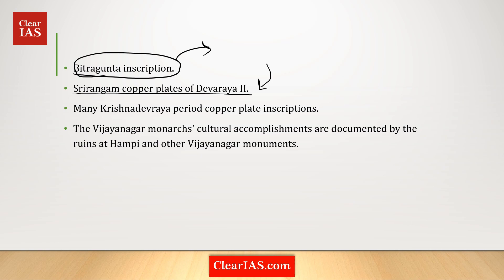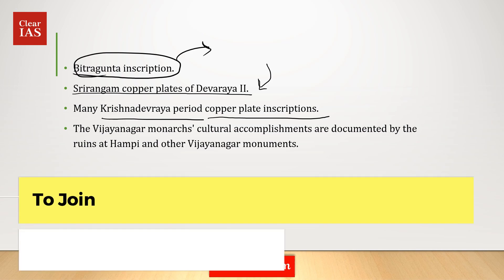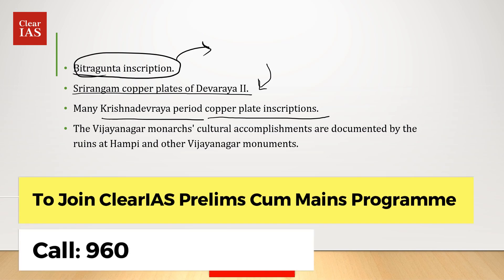Many copper plate inscriptions belonging to the Krishnadevaraya period have been found to date. The primary source for building the family history of the Sangama dynasty is the Bitragunte inscription. The cultural accomplishments of the Vijayanagara monarchs are also documented by the ruins of Hampi and other Vijayanagara monuments.